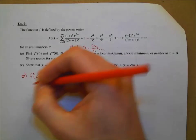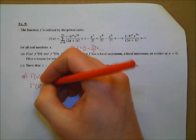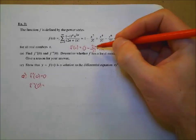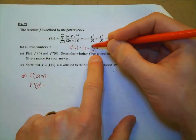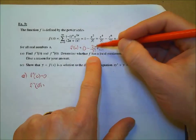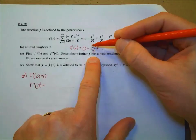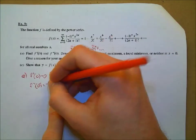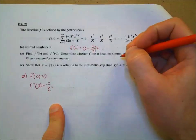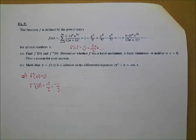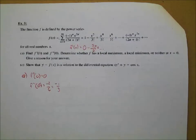What about F double prime of zero — will it also be zero? No. F double prime of zero is negative one third. Taking the derivative one more time: derivative of zero is still zero, and the derivative of minus two x over three factorial gives minus two over three factorial, which is negative two over six, which is negative one third.